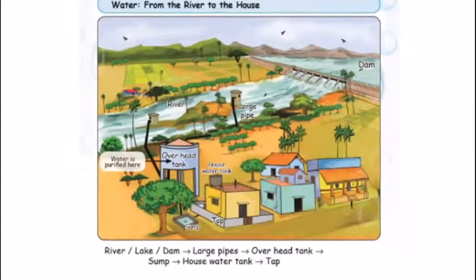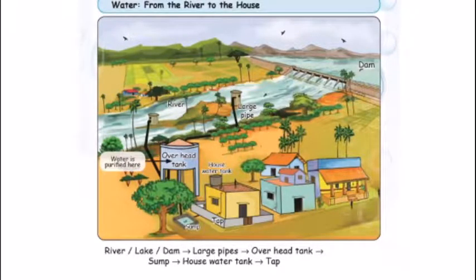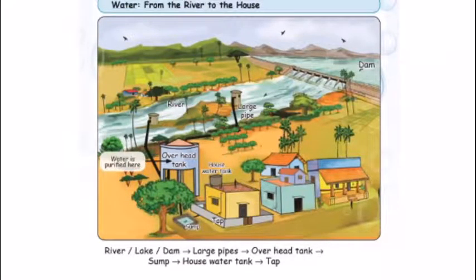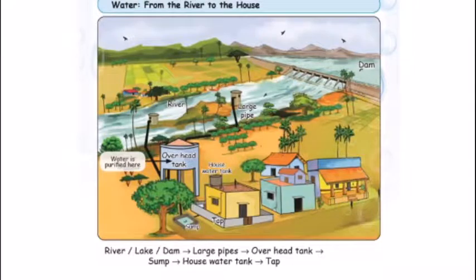Water goes from the river to the house. There is a dam, and at the bottom of the dam you can use a large pipe. Water is used by farmers through large pipes. How does the water go into the overhead tank? The sump is on the ground and water is stored in the house from there.